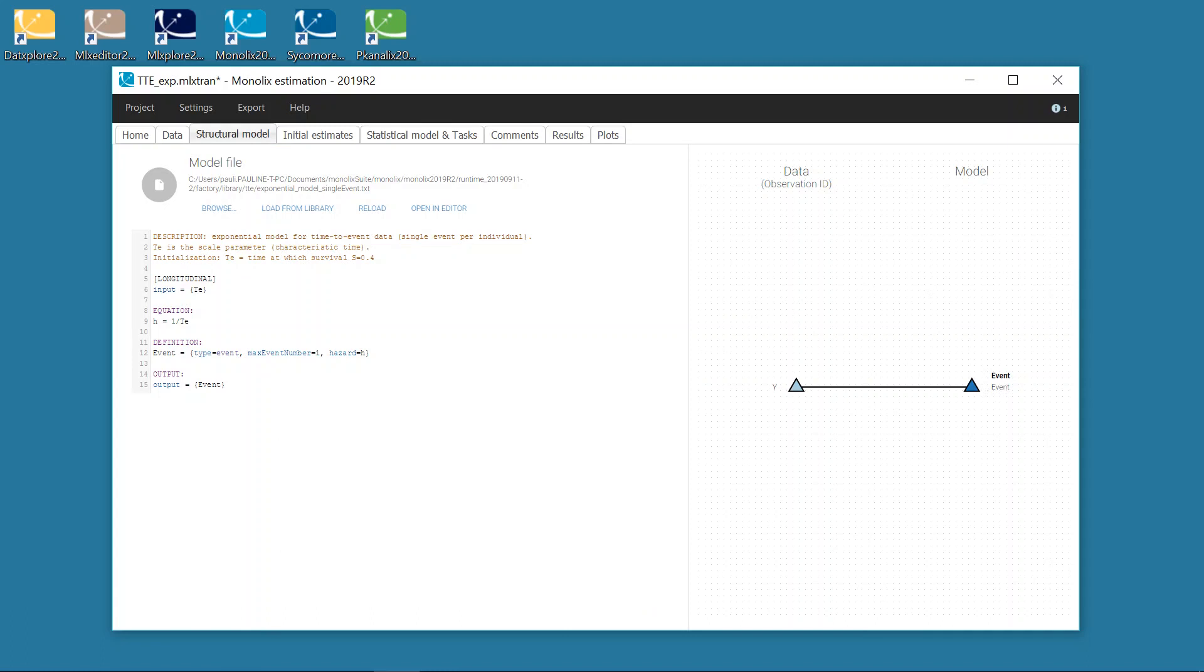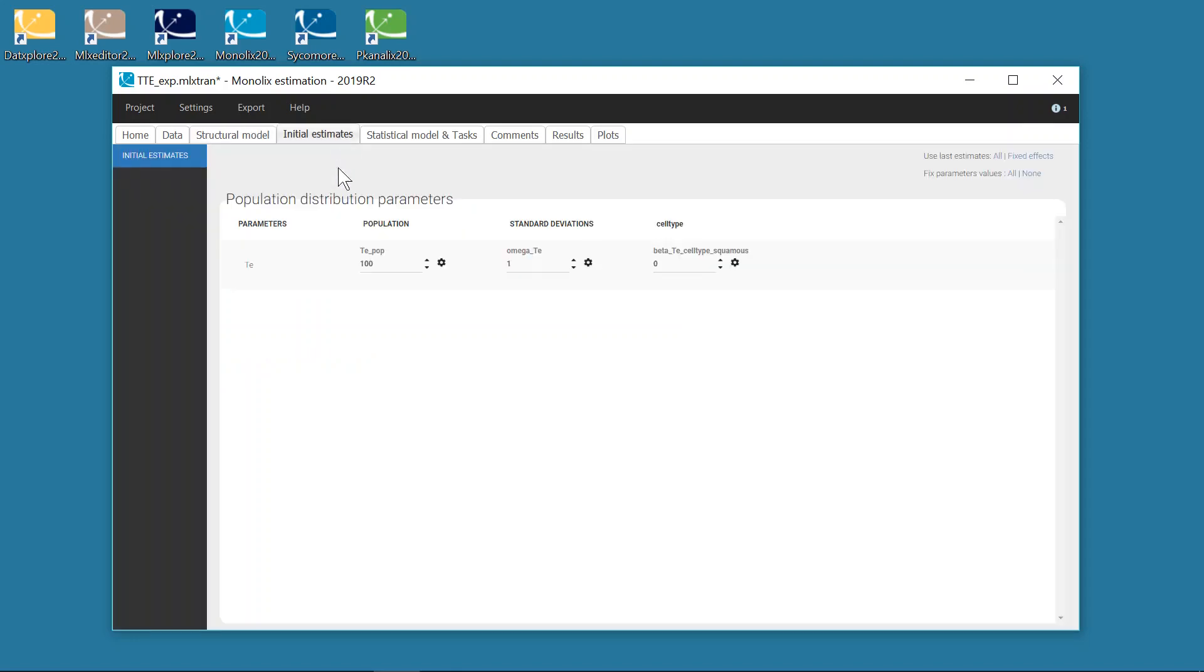The model is displayed here. In the description block, advice is given for the initialization. A typical value for the parameter TTE is the time for which the survival is 0.4. Thus, in the tab Initial Estimates, a relevant value was chosen based on this guideline and on the Kaplan-Meier plot. For the standard deviation of the random effect, I have left the default value of 1, which helps the convergence of the estimation algorithm.